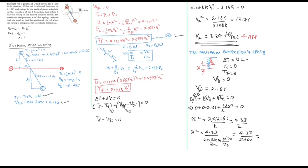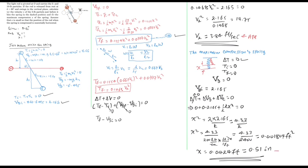Taking the square root, x = 0.0424 feet. Converting to inches by multiplying by 12 gives x = 0.51 inches. Both values can serve as the answer. This is the final answer for the maximum spring compression.